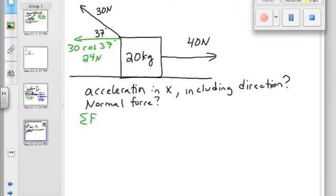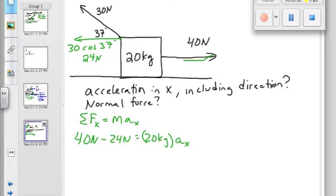Then we apply F equals ma. F in the x equals mass times the acceleration of the x. So we have two forces in the x. We have one going in that direction and one going in the opposite direction. So we'll use the bigger one, 40 newtons, minus the other one, 24 newtons, is equal to the mass, 20 kilograms, times the acceleration. So that's 16 newtons equals 20 kilograms times a. And a is what? 0.8 meters per second squared.